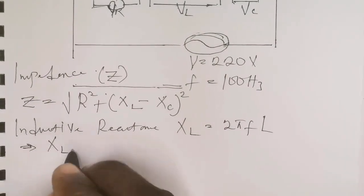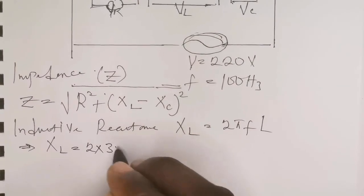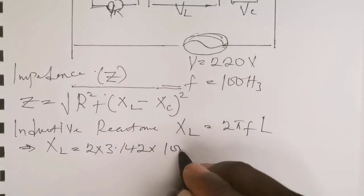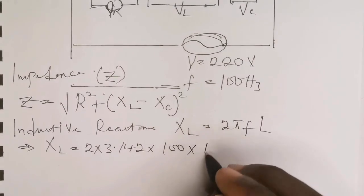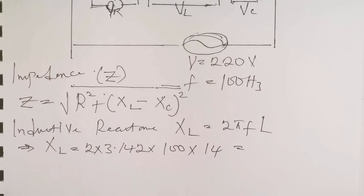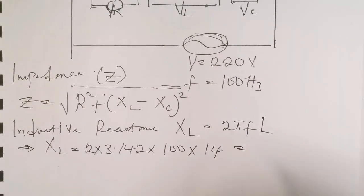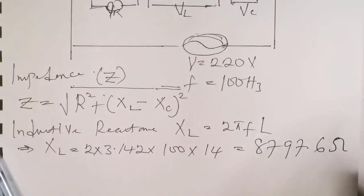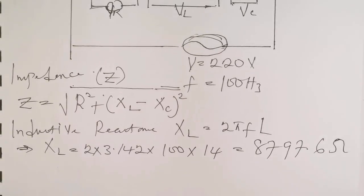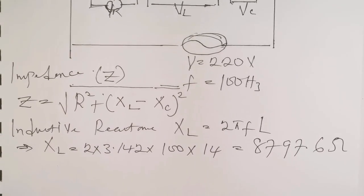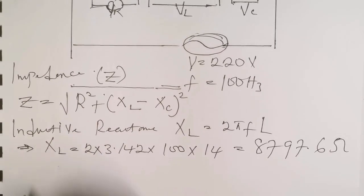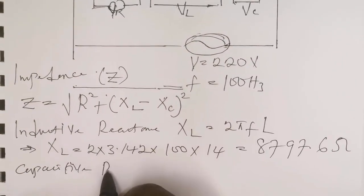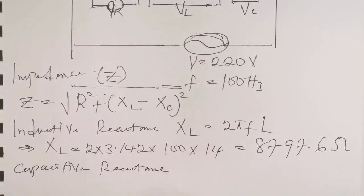The inductive reactance XL is given as 2πfL. So XL equals 2π (which is 3.142) times the frequency given as 100, times the inductance given as 14 Henry. Our inductive reactance works out to 8797.6 ohms.